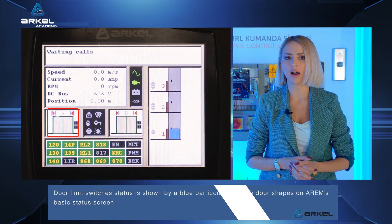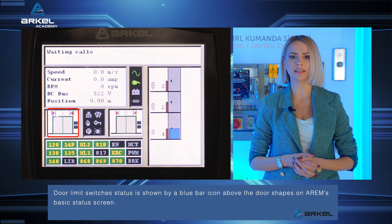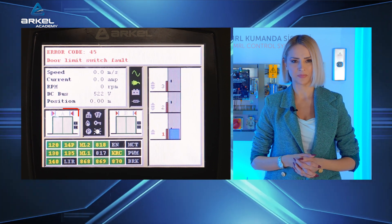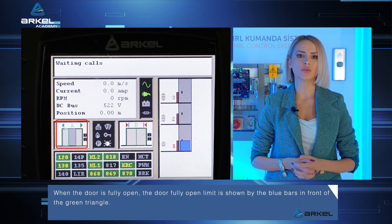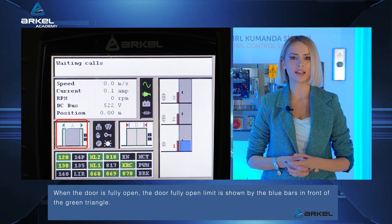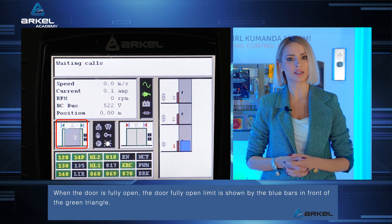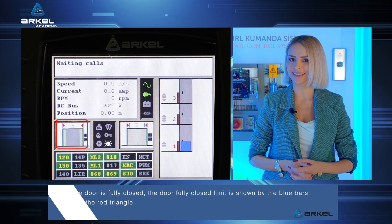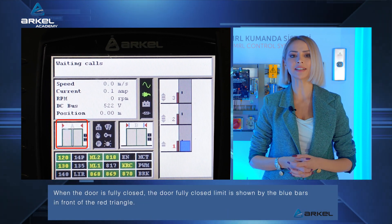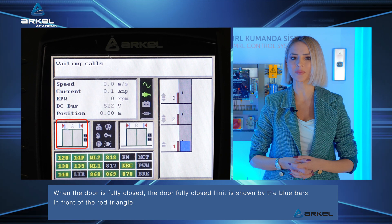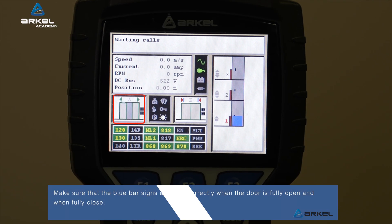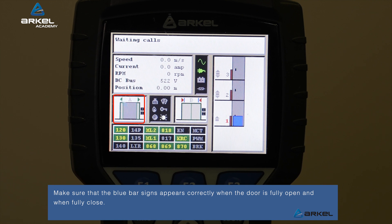Door limit switch status is shown by a blue bar icon above the door shapes on the RM's basic status screen. When the door is fully open, the door fully open limit is shown by the blue bars in front of the green triangle. When the door is fully closed, the door fully closed limit is shown by the blue bars in front of the red triangle. Make sure that the blue bar signs appear correctly when the door is fully open and when the door is fully closed.